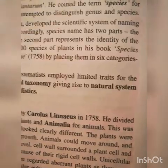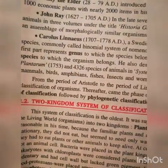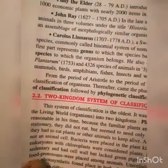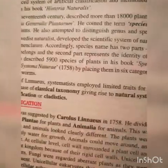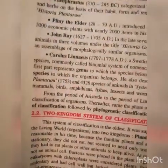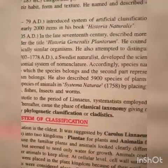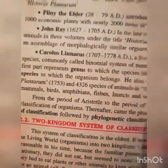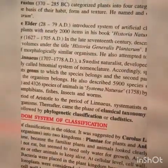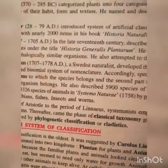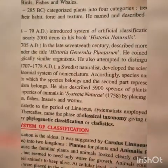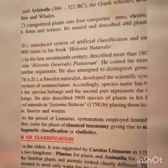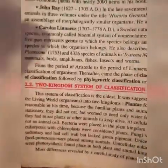Linnaeus described 4,326 species of animals in Systema Naturae (1758) by placing them in six categories: mammals, birds, amphibians, fish, insects, and worms. From the period of Aristotle to Linnaeus, systematists employed limited traits for classification. Thereafter came the phase of classical taxonomy, giving rise to the natural system of classification, followed by phylogenetic classification, which shows evolutionary relationships between organisms.